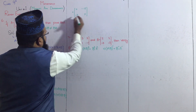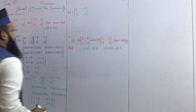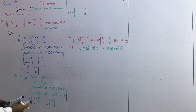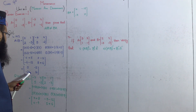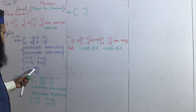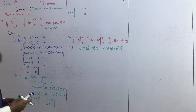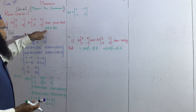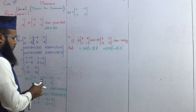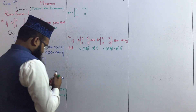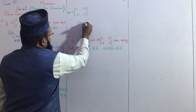Ab hamare paas BA find ho gaya. AB jo aya tha: [[5, minus 2], [minus 21, 14]]. BA jo aya: [[8, minus 15], [minus 4, 11]]. Yahi given tha ke AB is not equal to BA. Hence proved — left hand side is not equal to right hand side.